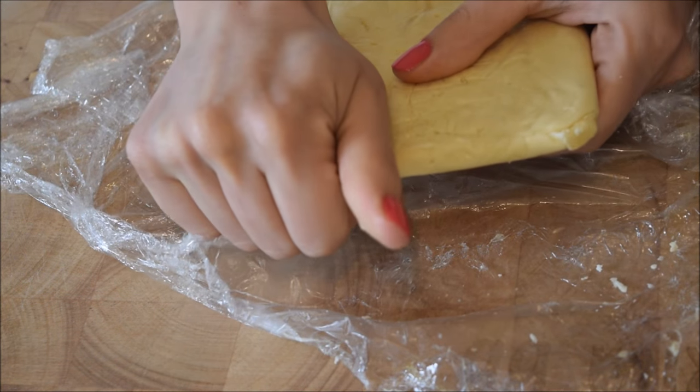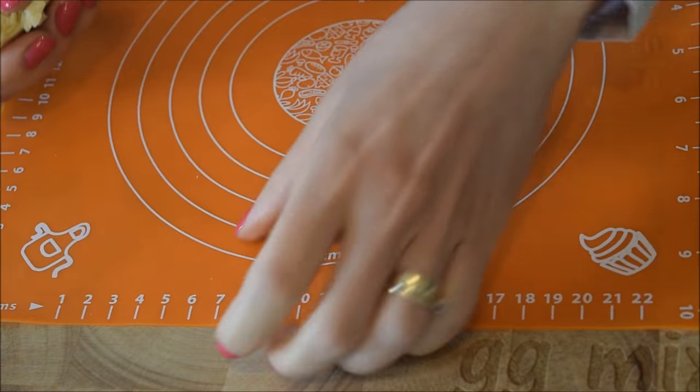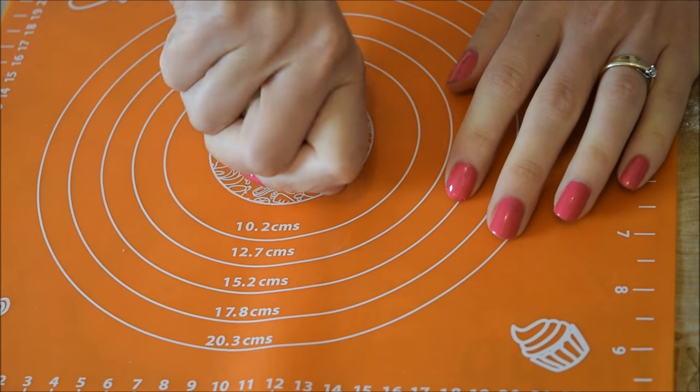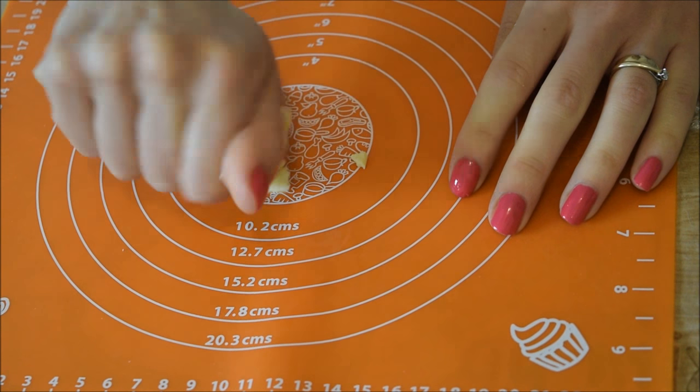The next day your chocolate should be rock hard. Break a bit off and on a silicone mat heat the chocolate in your hands to soften it up.